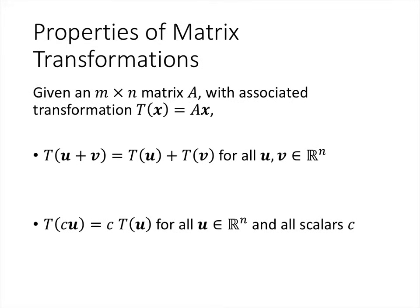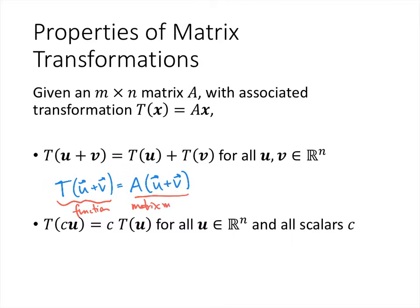These matrix transformations have a couple of nice properties. Whenever we have t(x) = Ax, one property is that t(u + v) = t(u) + t(v). The definition gives us t(u + v) = A(u + v). Note the notation: t(u + v) is function notation, while A(u + v) is matrix multiplication by a vector. By the distributivity of matrix multiplication, A(u + v) = Au + Av. Since Au = t(u) and Av = t(v), this proves the first property.